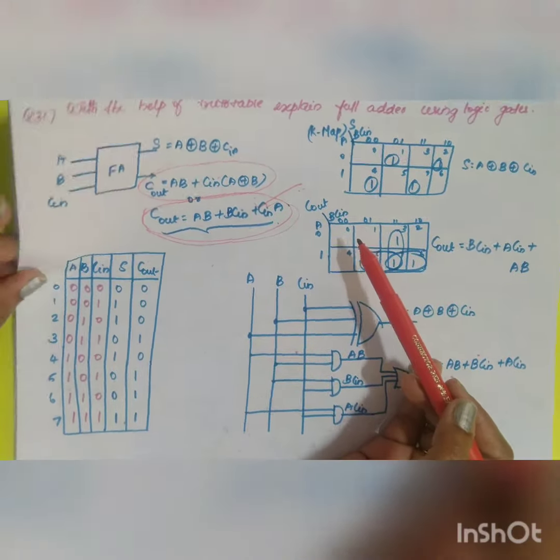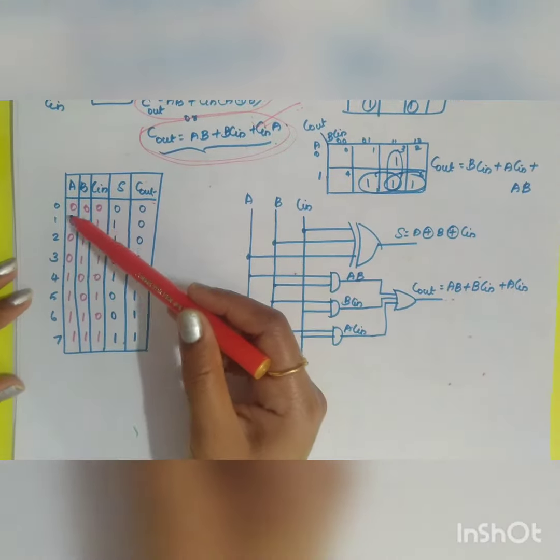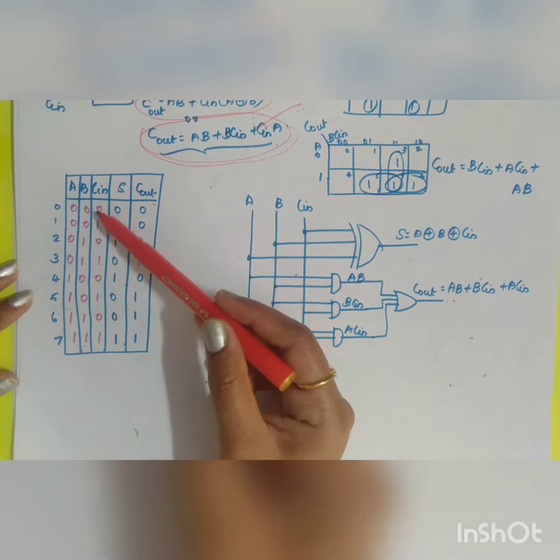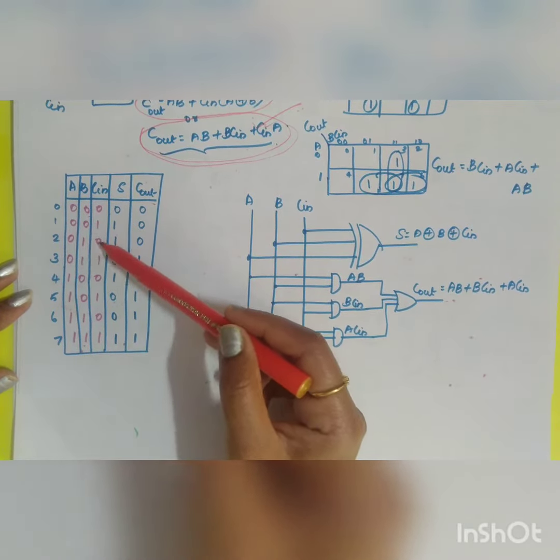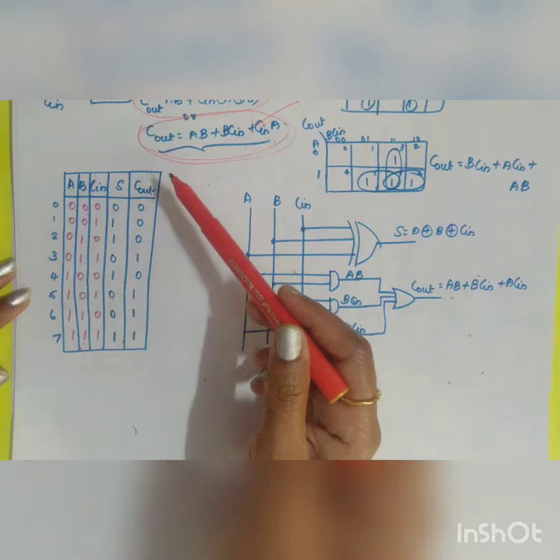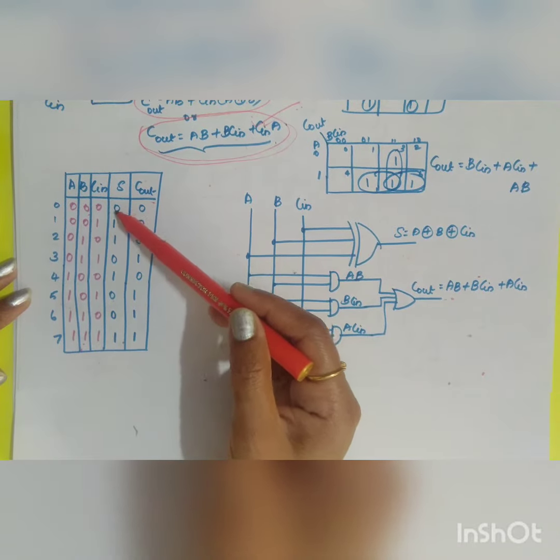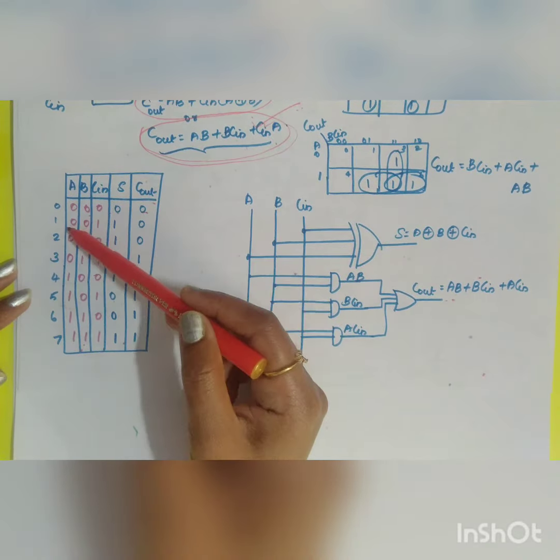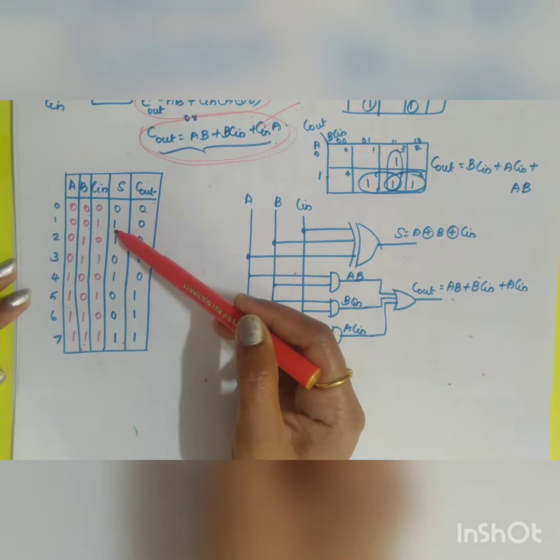A, B, Cin, sum, and carry out - you have the 0 to 7 combinations: 000, 001, 010, etc., as we have seen in the previous problem. Sum is equal to 0, carry is equal to 0. 0 plus 0 plus 1, your sum is equal to 1, carry is equal to 1. So this will be your truth table.